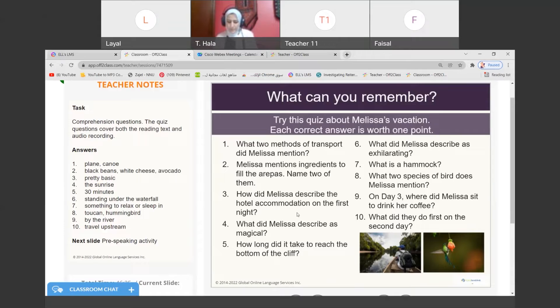Number three. How did Melissa describe the hotel accommodation on the first night? How was the place you slept in? It was old, it was pretty basic. Yes, pretty basic and what? What else? How was the staff? The staff was very pretty good, was friendly. And the food? The food was good.